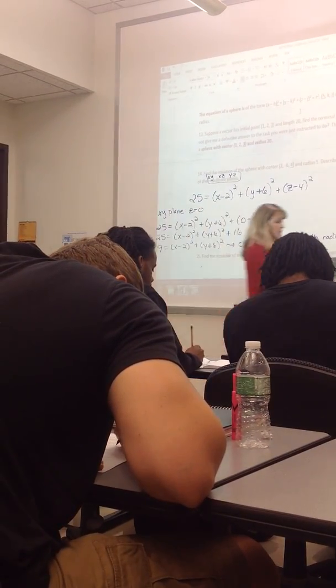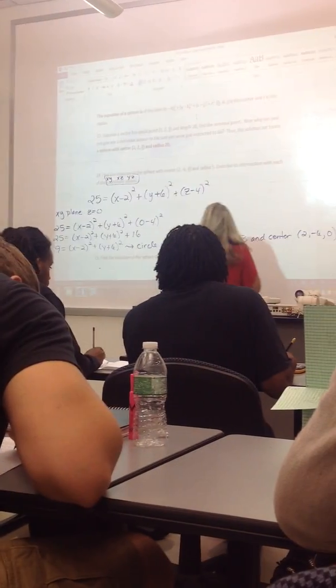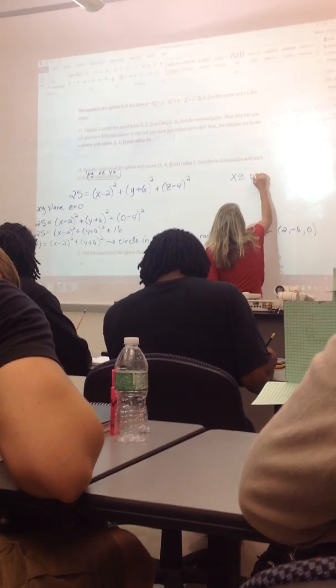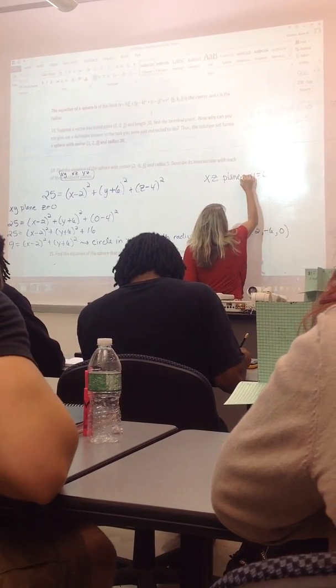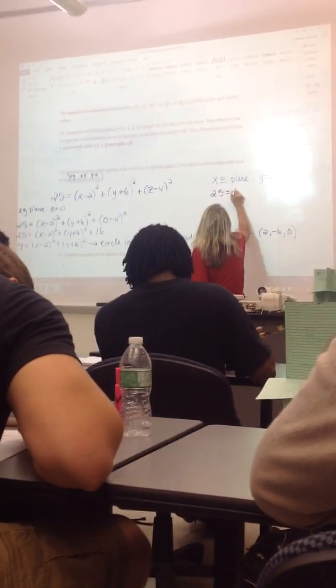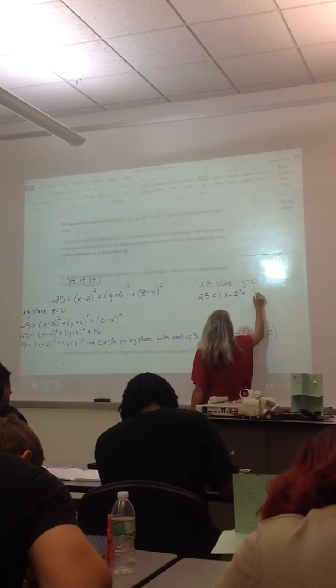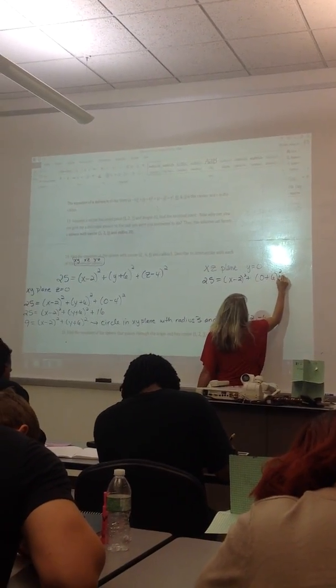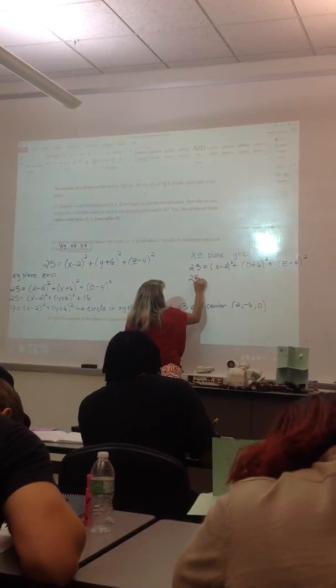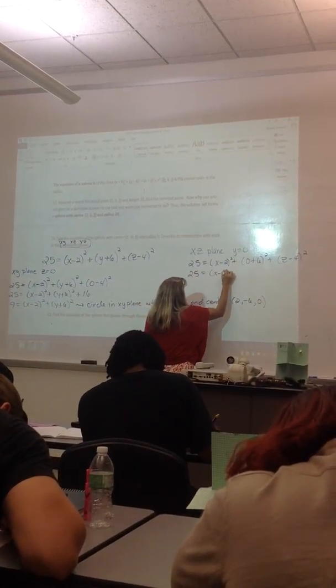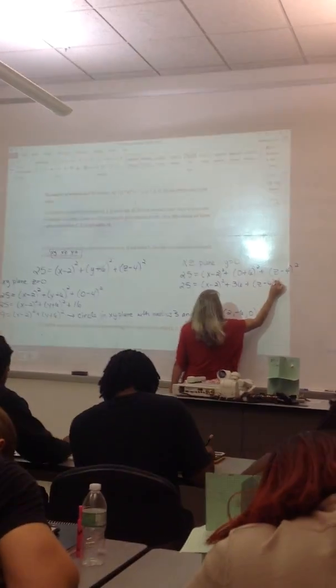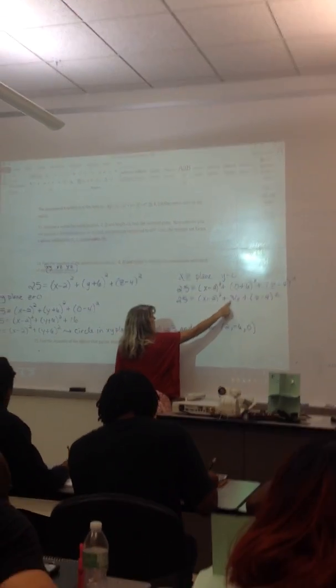So we're going to do similar algebra for the other two. If I intersect the xz plane, then y has to be 0. So that means 25 would equal x minus 2 squared plus 0 plus 6 squared plus z minus 4 squared. And what is 25 minus 36?